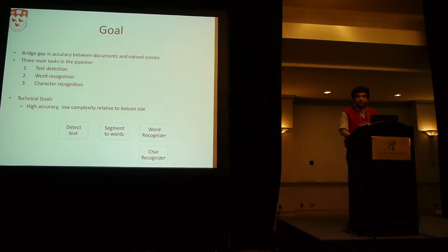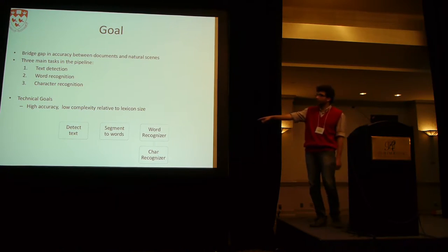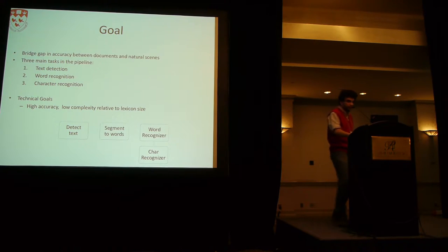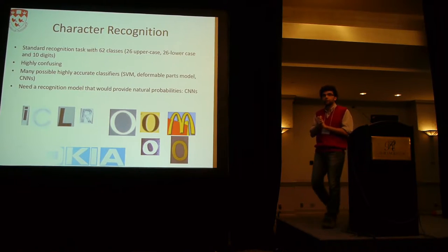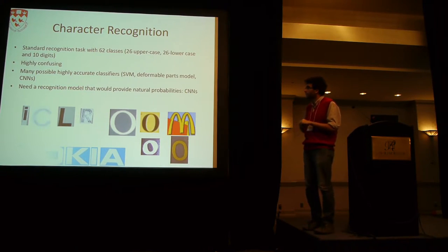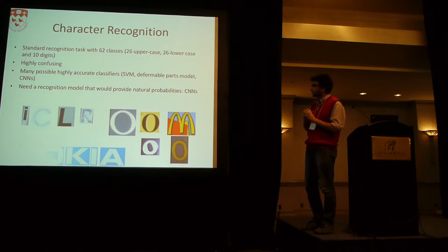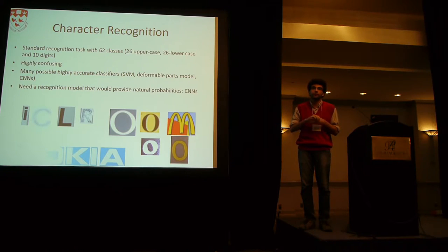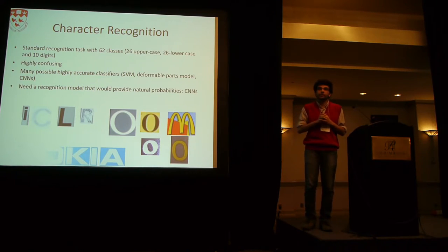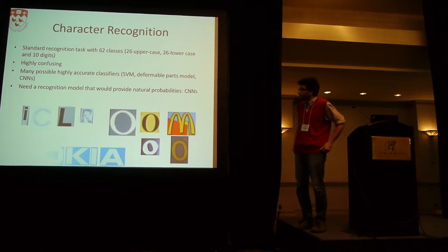I'll start from the bottom up — presenting the character recognizer, then the word recognizer, and then the text detector. Character recognition is a standard 62-class classification problem. It tends to be confusing because uppercase and lowercase characters can look identical, and without context information — which is not permissible on benchmark datasets — you can't do a great job.